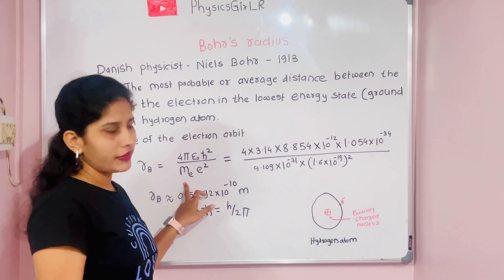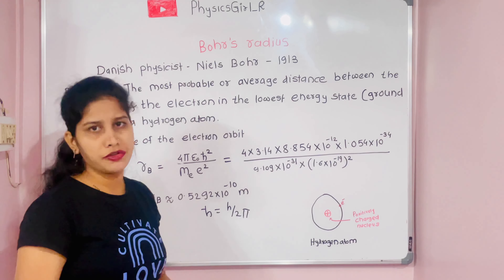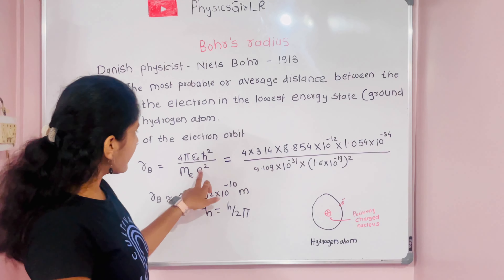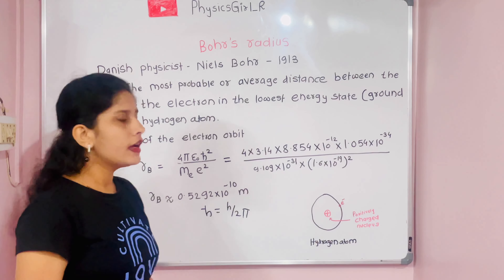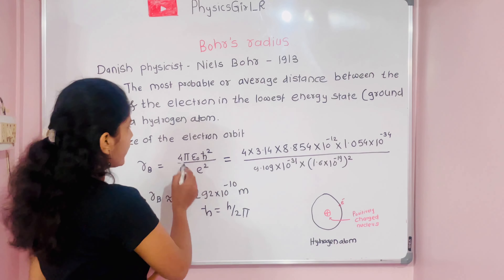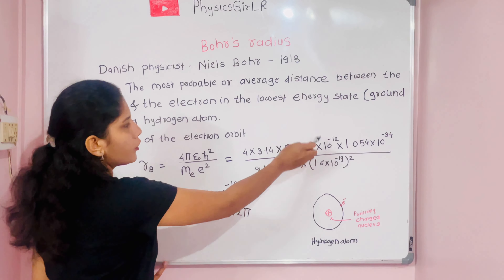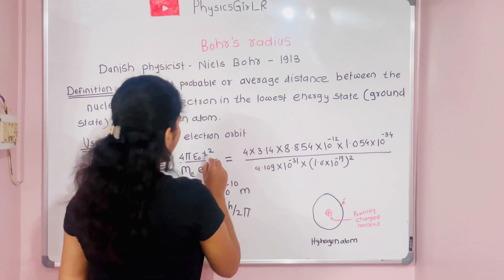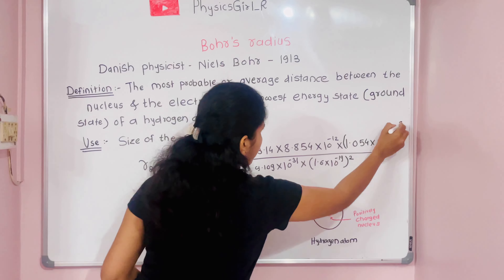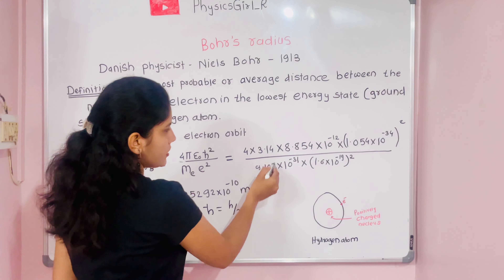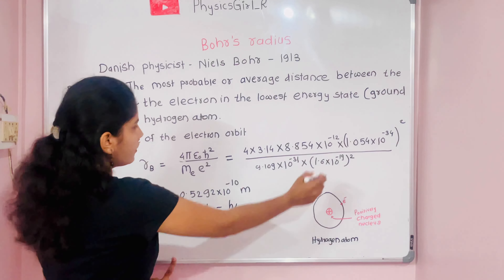mₑ is the mass of the electron, which is 9.109 × 10⁻³¹ kg. After that there is e, the elementary charge of the electron, which is 1.6 × 10⁻¹⁹. Now substituting all those values into the equation: 4 × π × ε₀ (8.854 × 10⁻¹²) × ħ² (1.054 × 10⁻³⁴)² divided by mₑ (9.109 × 10⁻³¹) × e² (1.6 × 10⁻¹⁹)².